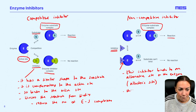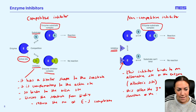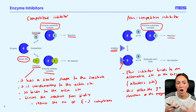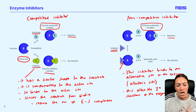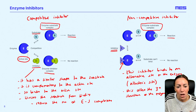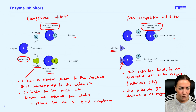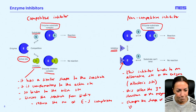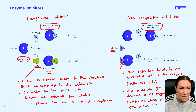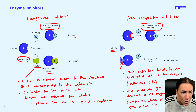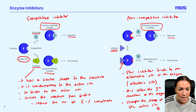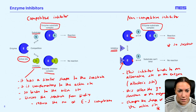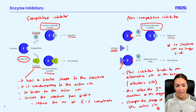When the non-competitive inhibitor binds to the allosteric site, this alters the tertiary structure of the enzyme, because the binding of that inhibitor is going to alter the bonds that hold the tertiary structure together. So it will lead to a change in the specific 3D shape of the enzyme — an overall change in what we call the tertiary structure. This then changes the shape of the active site, and if we change the shape of the active site, the substrate can no longer bind.